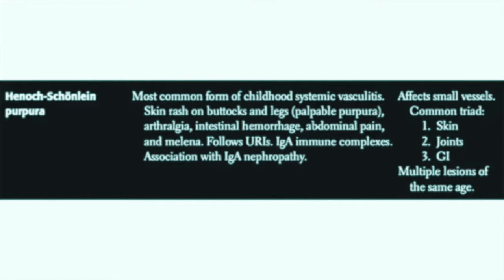Henoch-Schönlein purpura is the most common childhood systemic vasculitis. This disease affects the small vessels, and the common triad of involvement includes the skin, the joints, and the GI tract. These patients will present with a skin rash on the buttocks and the legs with palpable purpura, as well as arthralgias, intestinal hemorrhage, abdominal pain, and melena.